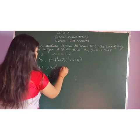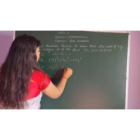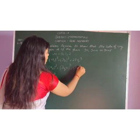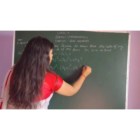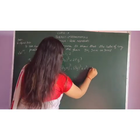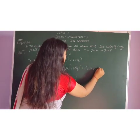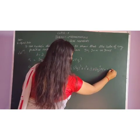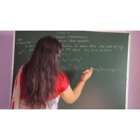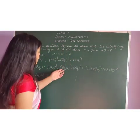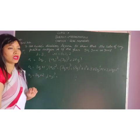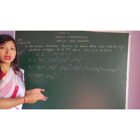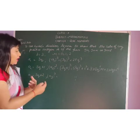Now A2 cube, that is (3Q plus 1) whole cube. It is (3Q)³ plus 1³ plus 3 times (3Q)² times 1 plus 3 times 3Q times 1². Now what we have done? We have applied A plus B whole cube. A plus B whole cube is A³ plus B³ plus 3A²B plus 3AB².